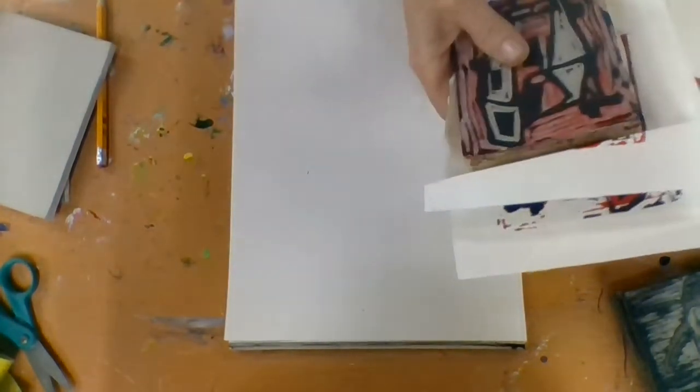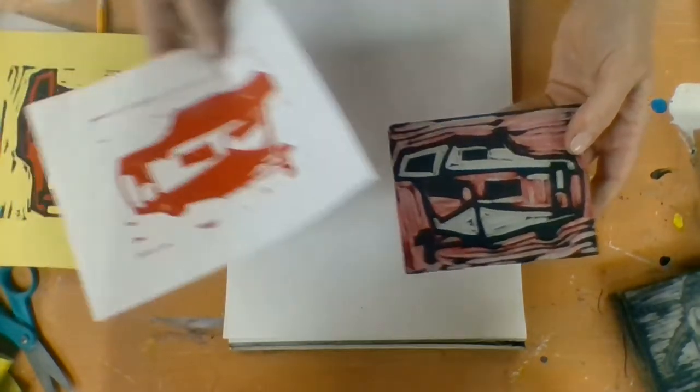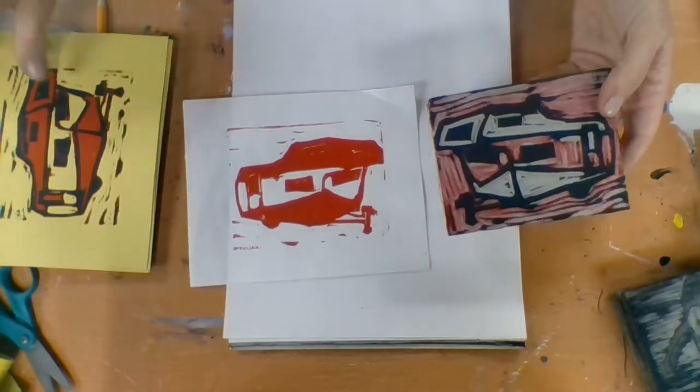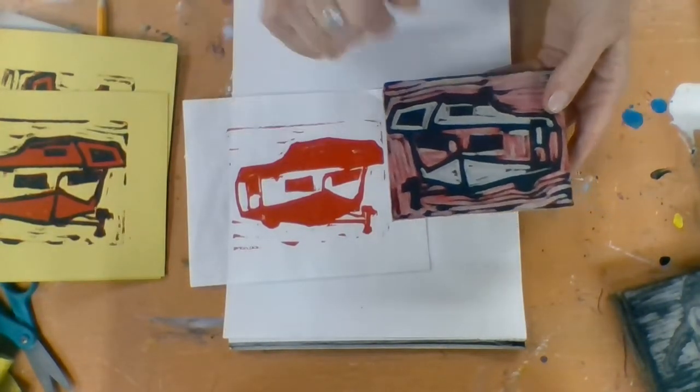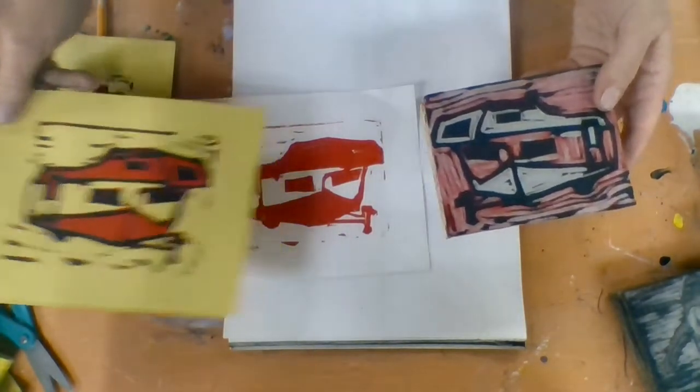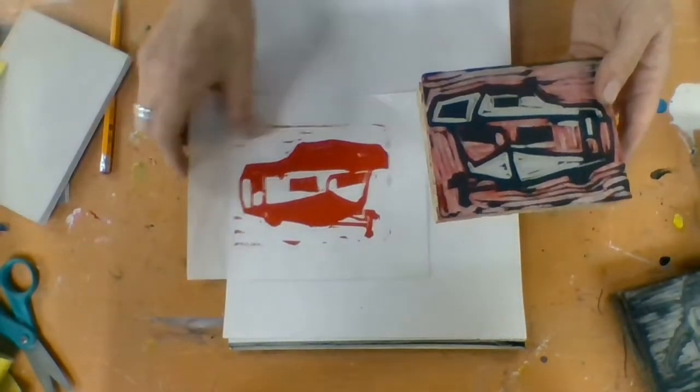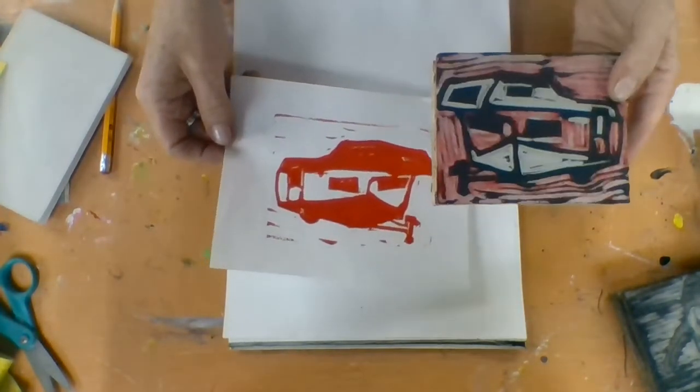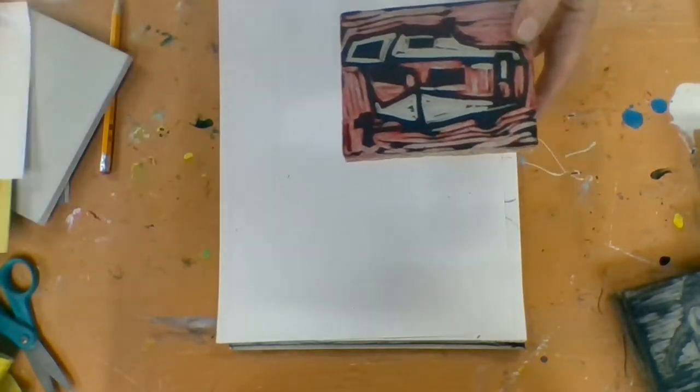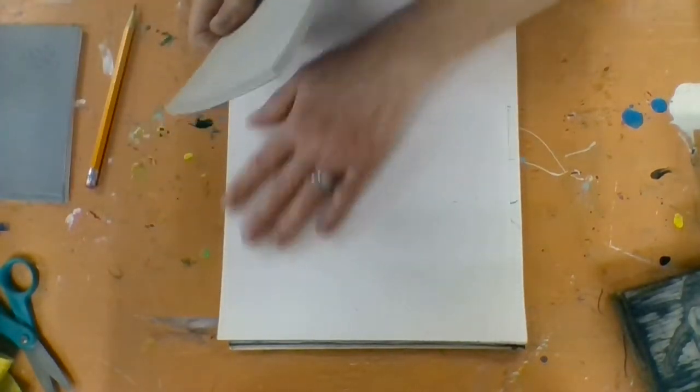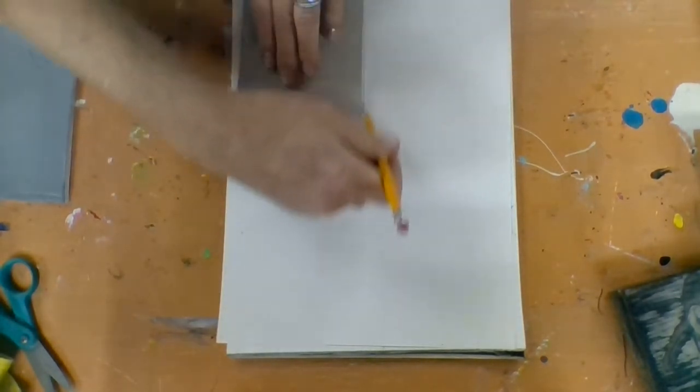So you guys are going to choose something that you love. So I printed my camper because I love to go camping and we have this old camper. I actually did a reduction print, which means I cut and I print the red and then I cut some more where I wanted it to stay red. And I printed black on top of the red.